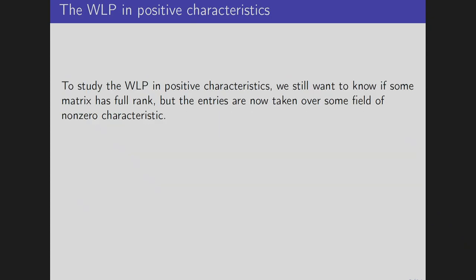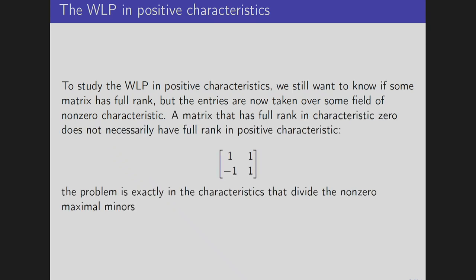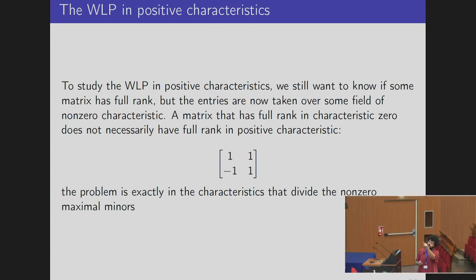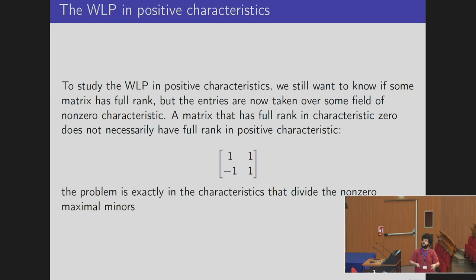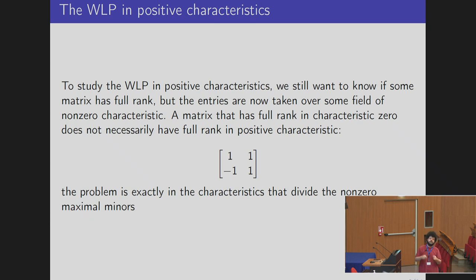When we go to positive characteristics the situation is a little different. Say you have a matrix like this: the theorem from Ehrhart theory tells us the rank equals the analytic spread of some ideal, but in positive characteristics some maximal minors of your matrix — in the two-by-two case, just the determinant — can be zero. For example, in characteristic two the determinant becomes zero and you lose rank, even though over Z or over C you still have maximal rank.